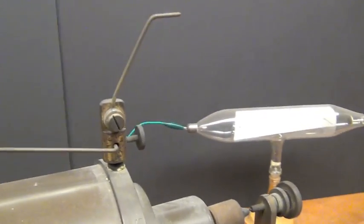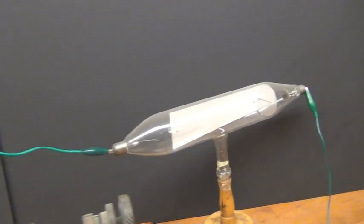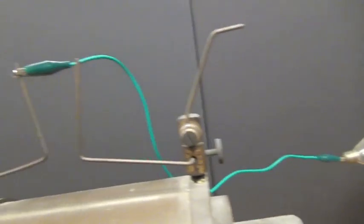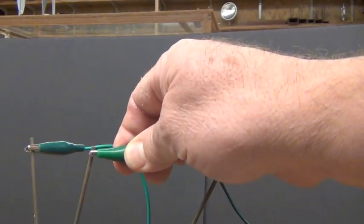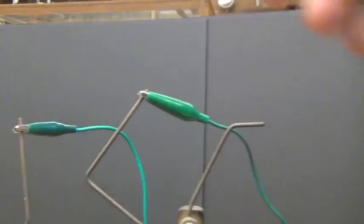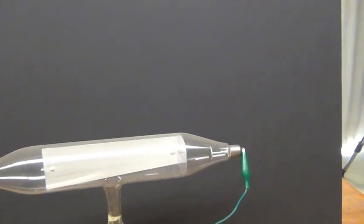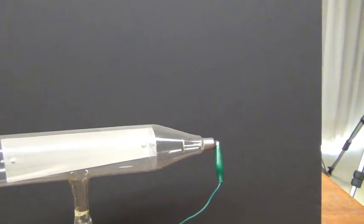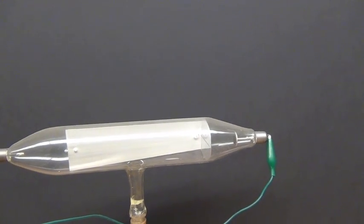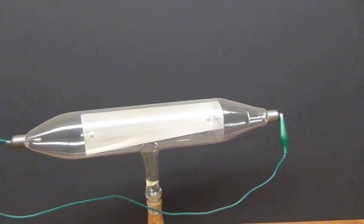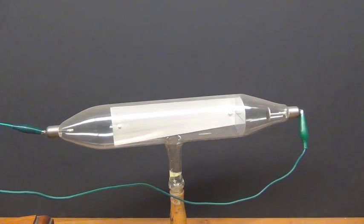I'm going to connect a Crookes tube across that potential and this will drive the tube and what we will see is a beam of electrons is going to be projected onto the screen which has a phosphor on it so it's going to glow blue.